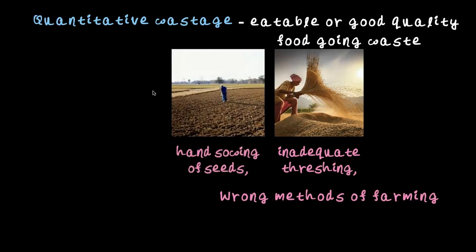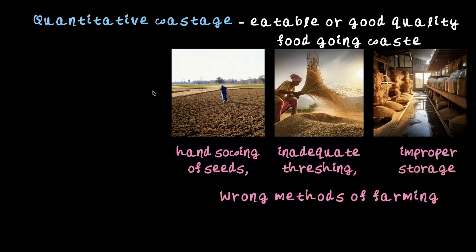Then there is hand sowing of seeds. If you are sowing the seeds by hand, there is a high chance that only a few seeds become saplings and grow into a proper crop. Some seeds not properly immersed in the soil will not take root and will die. Good quality seed is going to waste. Improper storage also means high quality grains get spoiled due to moisture or insect attack.